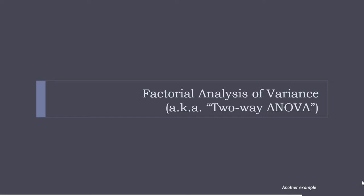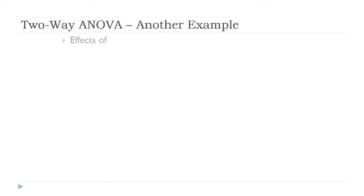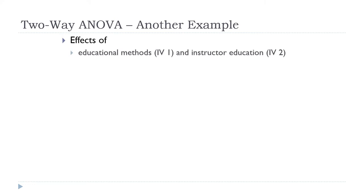Let's get going with this lecture. This is more two-way analysis of variance, factorial analysis of variance. We're just going to run through another example, but first we're going to talk a little bit about what we're going to be looking at here. We're going to be looking at the effects of educational methods — that's the first independent variable — and instructor education, the second independent variable, on students' grades in a math course.